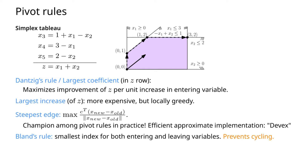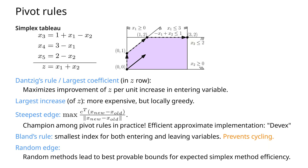Another rule is Bland's rule, which simply takes the variable with the smallest index. Also, if there are several choices for swapping basic variables out, we again take the one with the smallest index. This will prevent cycling. Otherwise it's rather slow compared to the other methods, but it does guarantee that we avoid cycling, so in terms of theory it's a good rule to have. Another option is simply taking a random edge from where we are, which allows us to prove interesting theoretical guarantees in terms of expected efficiency.